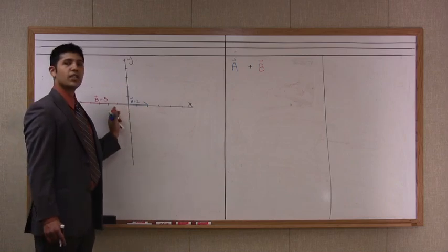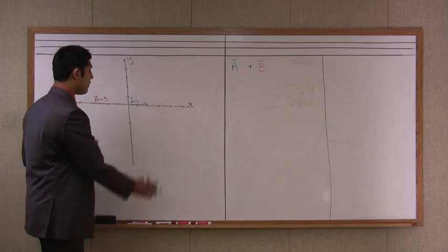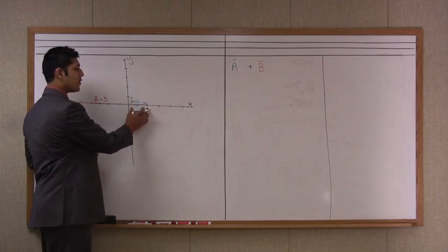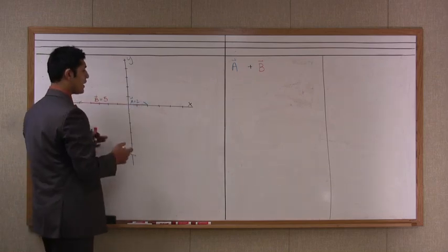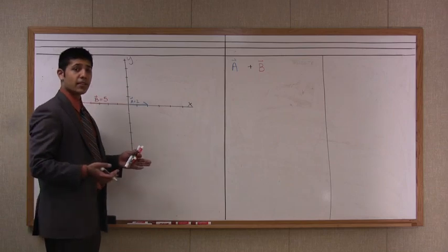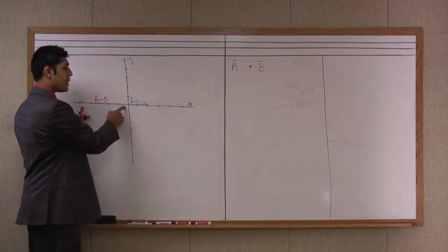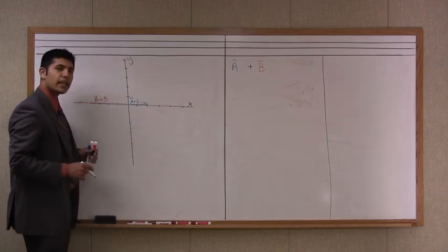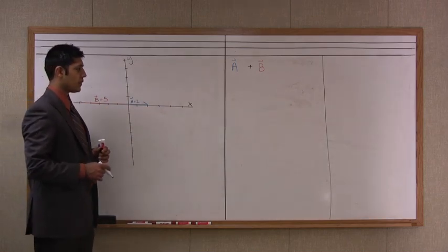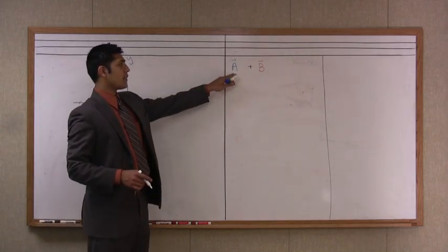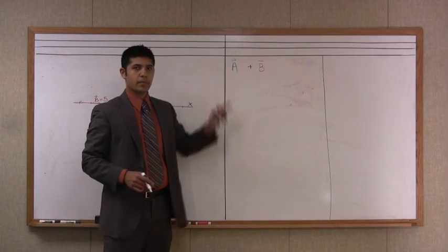Now this type of vector addition is pretty easy. We have a blue vector called a, which is two units to the right, which we commonly call a positive x-direction. And we have a red vector, which is vector b, which is five units in the negative direction of the x-axis. And the problem that we have is what is vector a plus vector b.